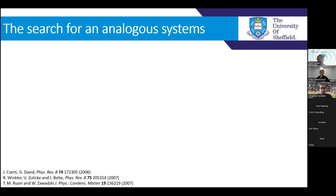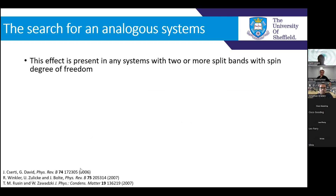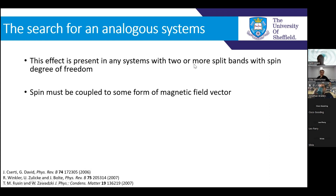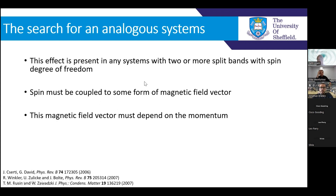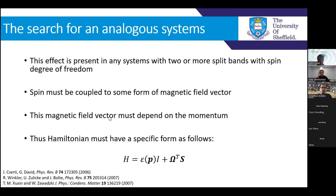When searching for an analogous system, it's important to understand what ingredients we need for the Zitterbewegung effect to be present. The first and most important ingredient is that the system must have two or more split energy bands and also a spin degree of freedom. That spin must be coupled to some form of magnetic field vector, which will typically arise from these spin-split energy bands, and that magnetic field vector must also depend on the momentum.